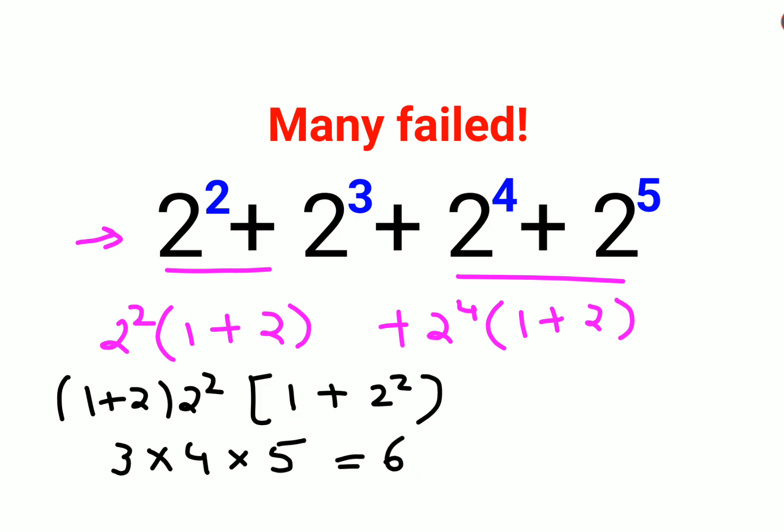Or students, you can directly put the values which is 2^2 that is 4, 2^3 that is 8, 2^4 that is 16, and 2^5 that is 32. When you add all of them you get the answer as 60. Either way works for you.